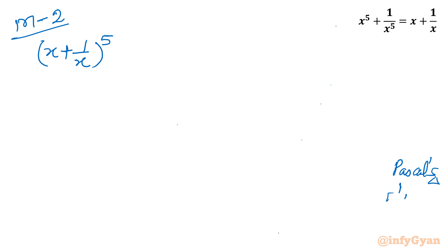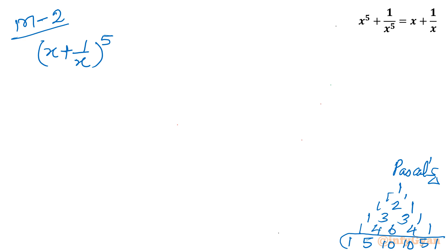Pascal's triangle rows: power 1 gives 1,1; power 2 gives 1,2,1; power 3 gives 1,3,3,1; power 4 gives 1,4,6,4,1; and for power 5 the coefficients are 1, 5, 10, 10, 5, 1.